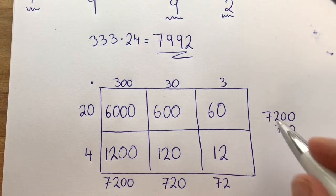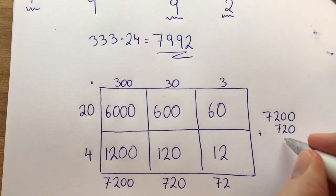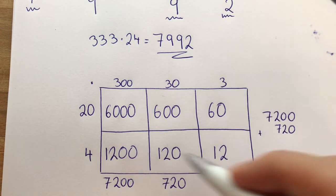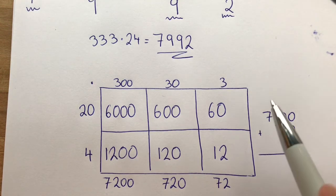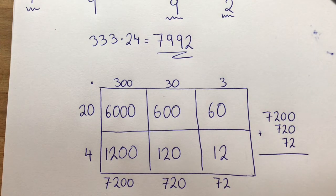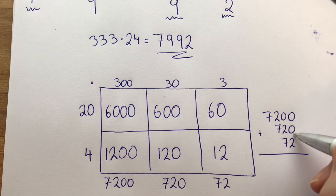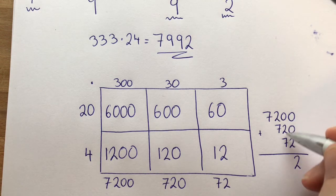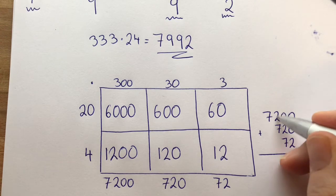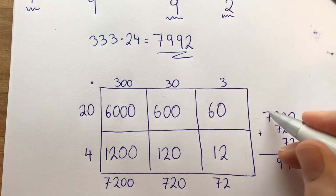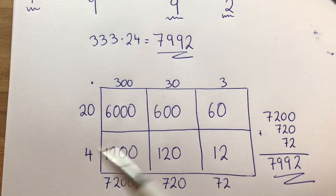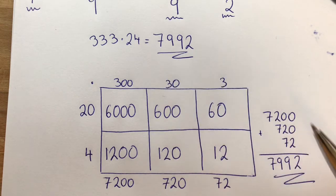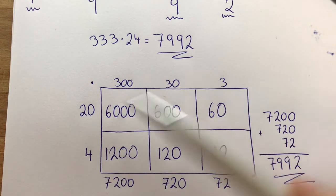Then we had the sum of 30 times 20 plus 30 times 4, which is 720. And then we add the sum of 3 times 20, which is 60, plus 3 times 4, which is 12, giving us 72. When we have all of these squares and add them all up, we get the final answer for 333 times 24: 0 plus 0 plus 2 is 2; 2 plus 7 plus 0 is 9; and 7 plus 0 thousands is 7 — so 7,992.